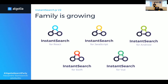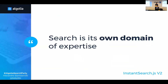But the real question is: why do we invest so much in these libraries? The reason is that search is its own domain of expertise. On one hand, you have specific concepts and vocabulary that may be foreign — like disjunctive faceting, hierarchical faceting. You can also have thousands of options that you have to learn about through the API.